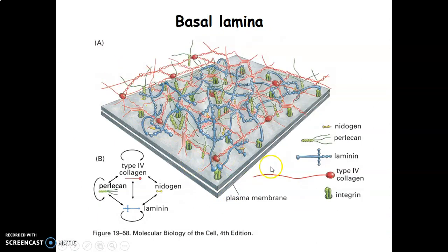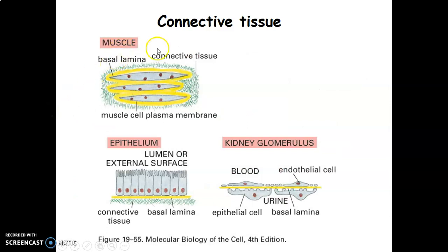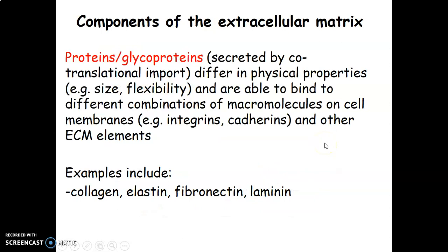The basal lamina contains different proteins such as integrins, laminins, and collagen type 4. Connective tissue is found under the epithelium and contains collagen and elastic fibers, neurovascular structures, cells such as fibroblasts, and extracellular matrix proteins such as hyaluronan, proteoglycans, and glycoproteins. In muscle, you have muscle cells with connective tissue around them, and just beneath the epithelium there is also connective tissue.